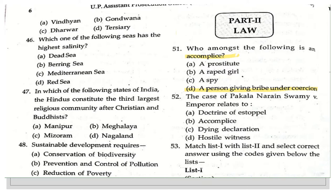The next question is: the case of Pakala Narayan Swami versus Emperor relates to which provision? The options given are: doctrine of estoppel, accomplice, dying declaration, and hostile witness. The right answer is dying declaration, which has been discussed under Section 32 of the Indian Evidence Act.